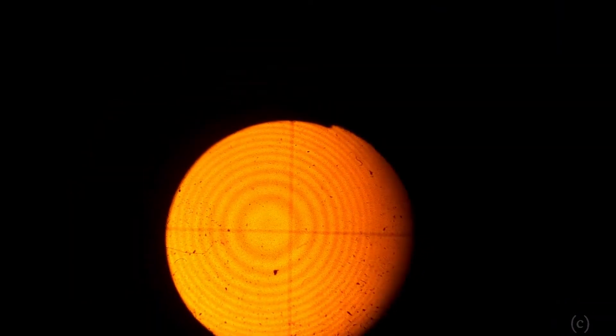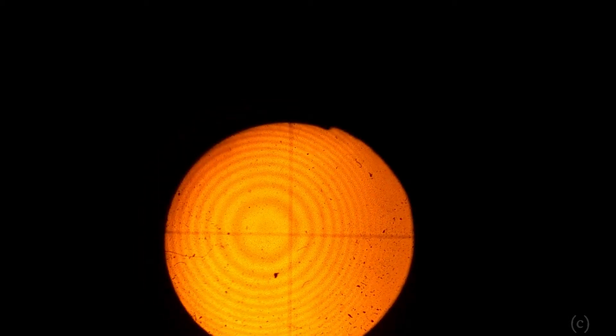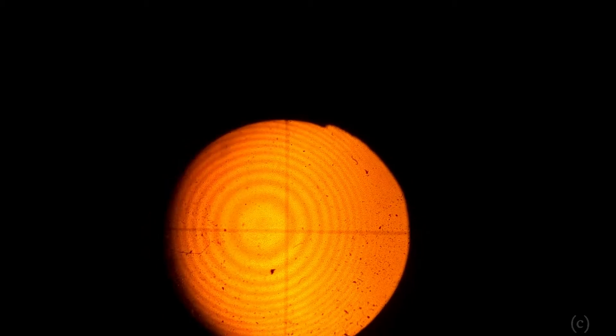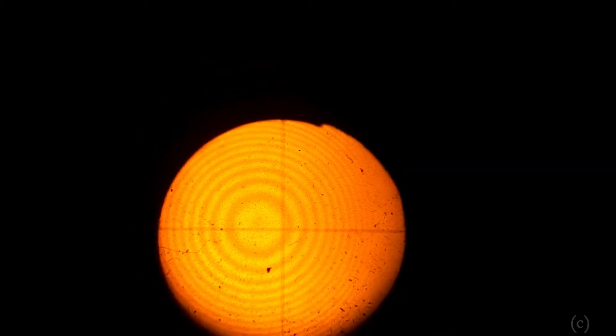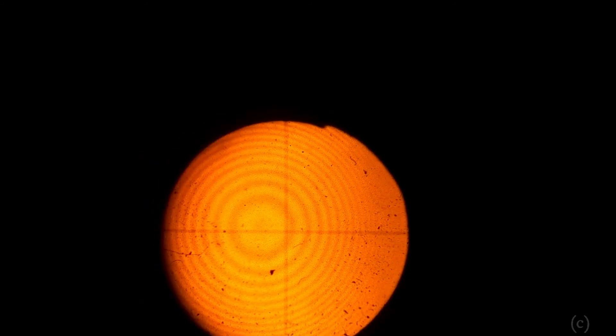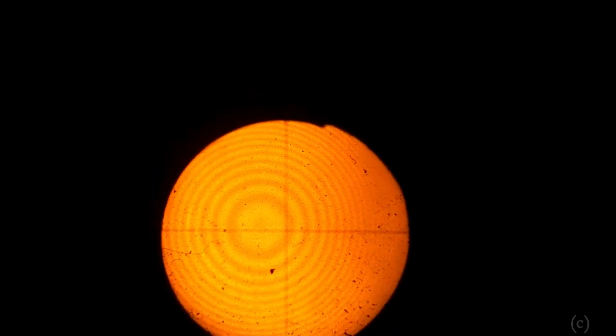So these are the Newton's rings, alternate bright and dark rings. Circular rings you can see, center is dark, then bright ring, dark ring. Thickness of the Newton's rings goes on decreasing away from the center. All the rings are concentric rings.